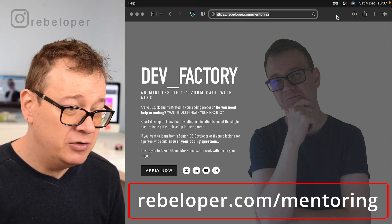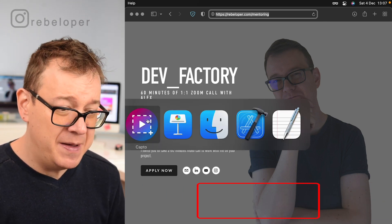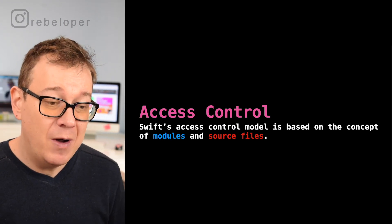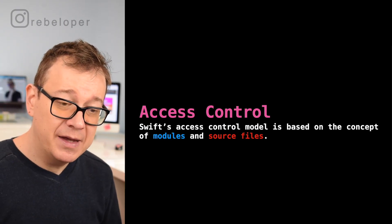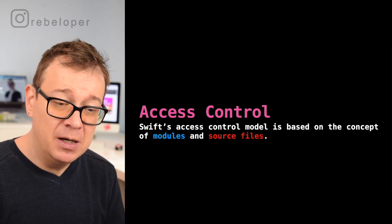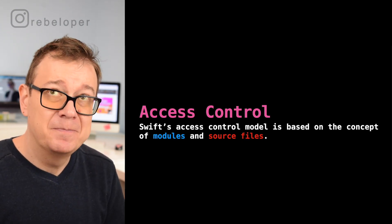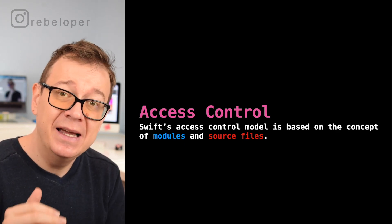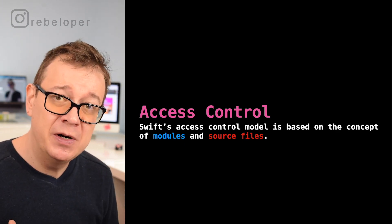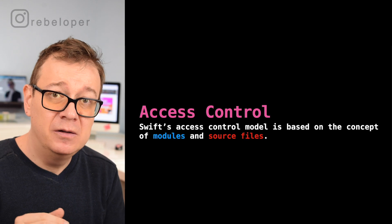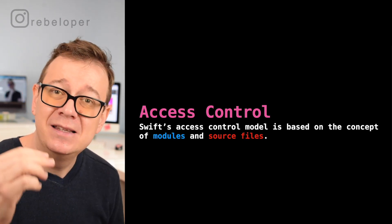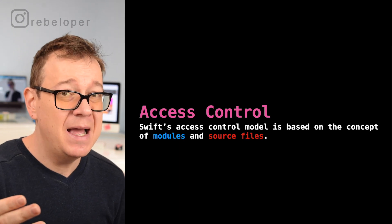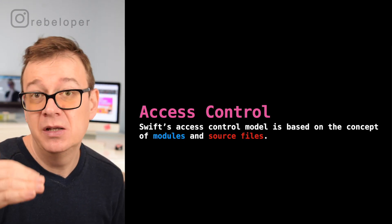So let's jump right into it — I've prepared a keynote for this. What is access control? Access control is Swift's model of accessing files, functions, classes, and all of the properties on a defined level. What it means is that you may access them or you may not, or only at a certain level.